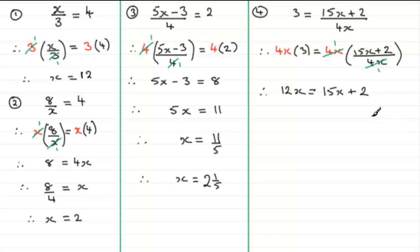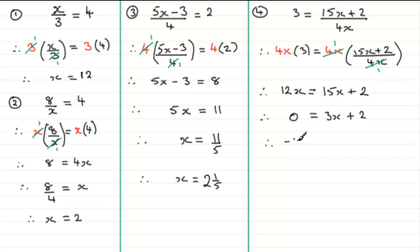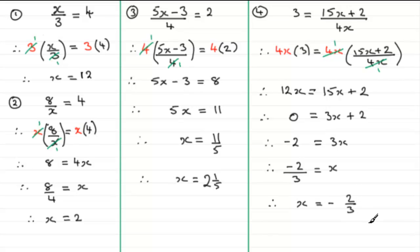Subtracting 12x from both sides gives 0 equals 3x plus 2. Subtracting 2 from both sides gives minus 2 equals 3x. Dividing both sides by 3 gives x equals minus 2 over 3, or minus two thirds.